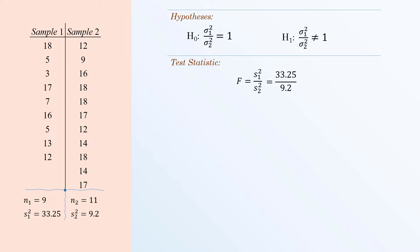We usually place the largest sample variance in the numerator. Doing this allows us to compare the test statistic to the right-tailed critical value only.